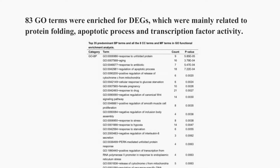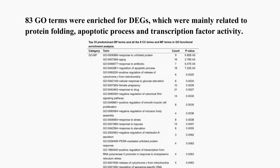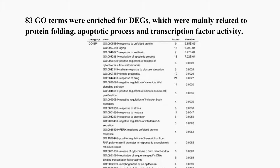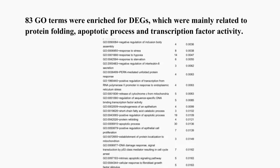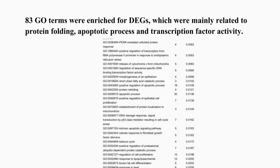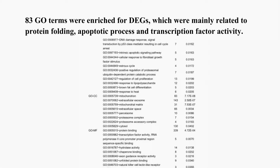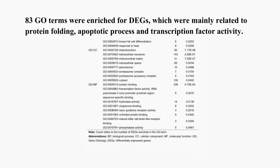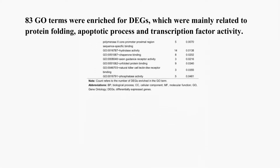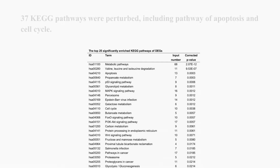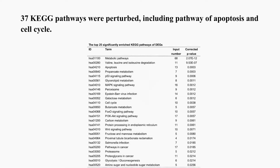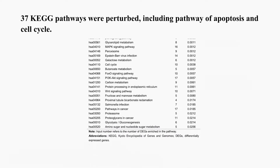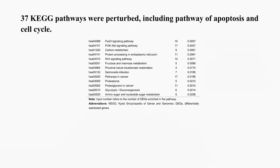83 GO terms were enriched for DEGs, which were mainly related to protein folding, apoptotic process, and transcription factor activity. 37 KEGG pathways were perturbed, including the pathway of apoptosis and cell cycle.